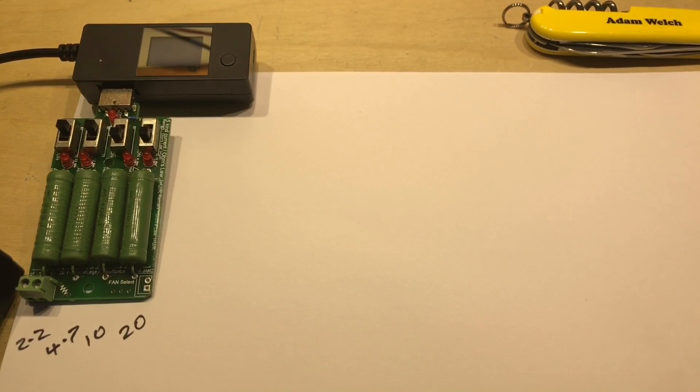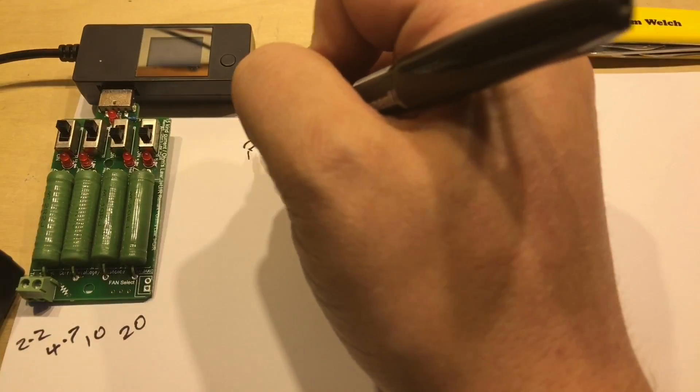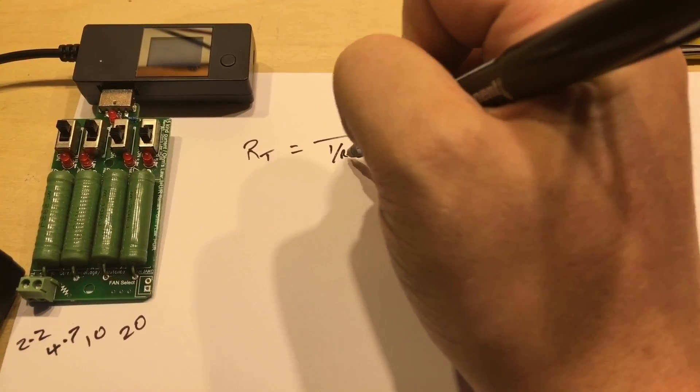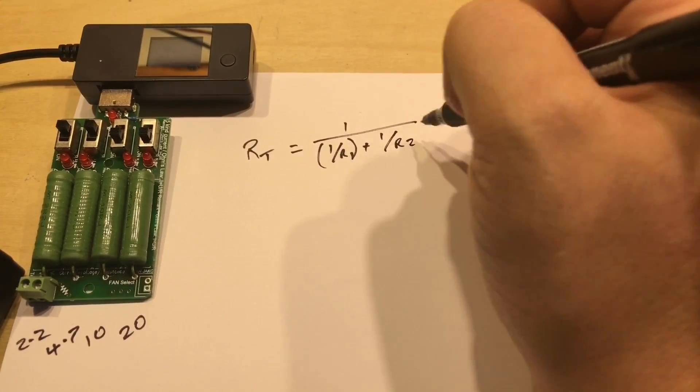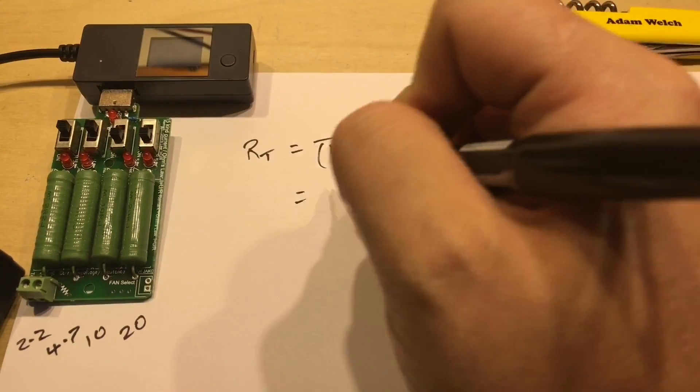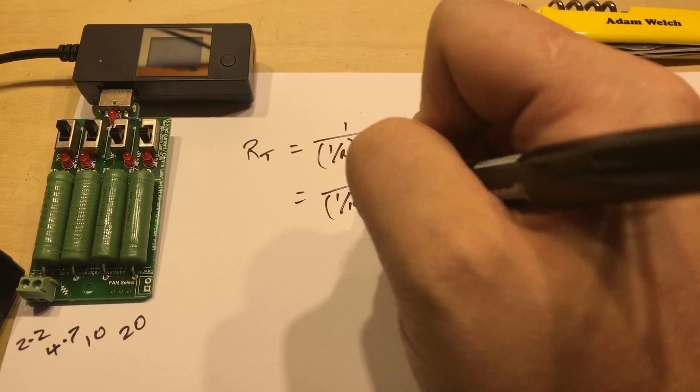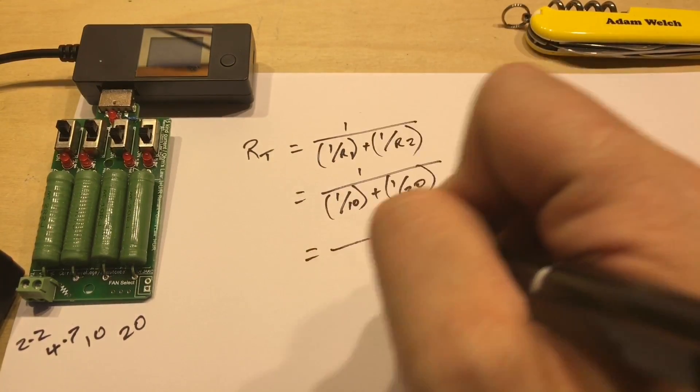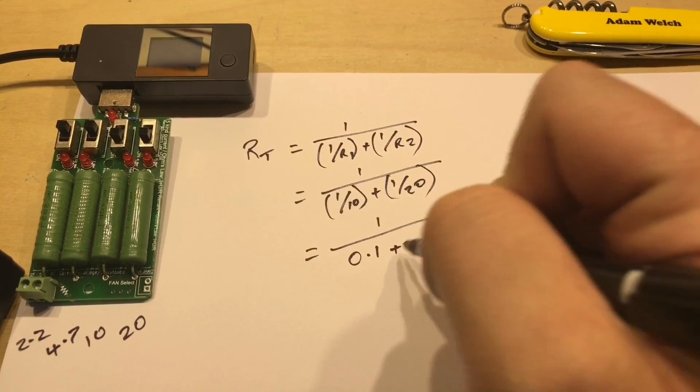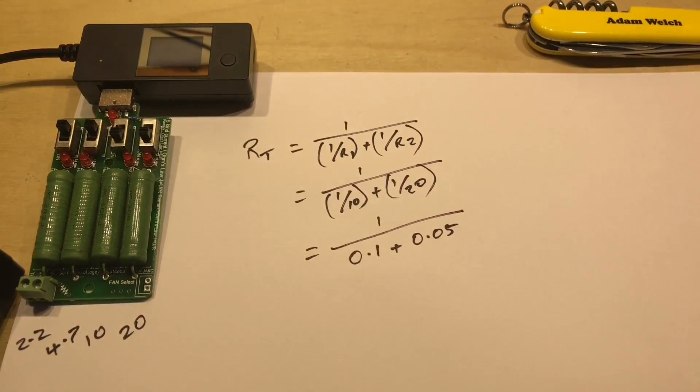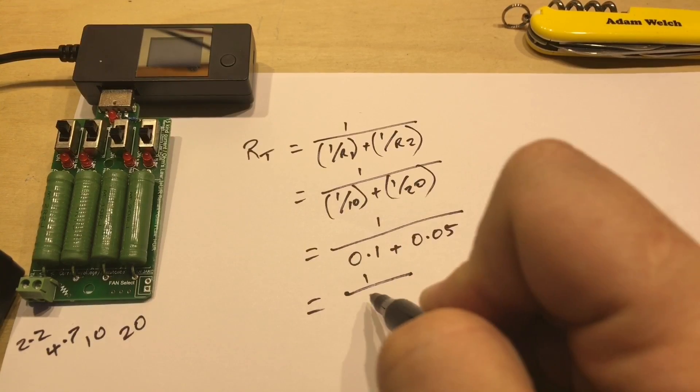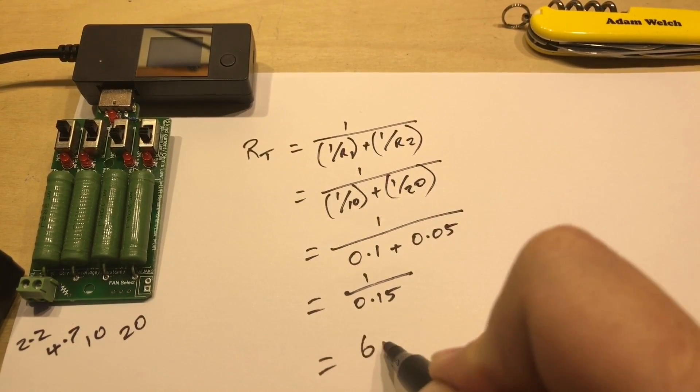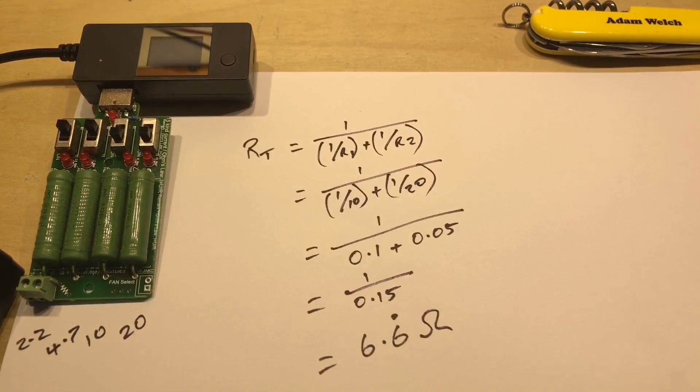So if we remember that equation, the total resistance equals 1 over (1 over R1 plus 1 over R2). So that equals 1 over (1 over 10 plus 1 over 20) in this example. And without a calculator, I can work out that that's 0.1 plus 0.05, which gives us 1 over 0.15, and 1 divided by 0.15 gives us 6.6 recurring and that of course will be in ohms.